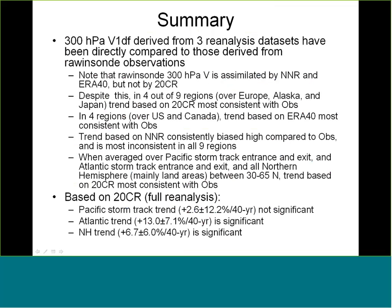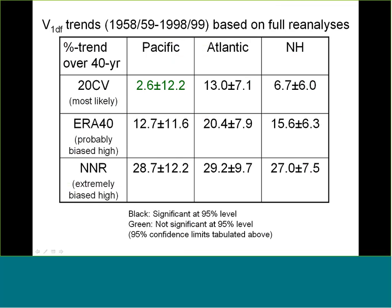The summary of this comparison is that even though radiosonde observations are assimilated by NCEP-NCAR reanalysis and ERA-40, but not by the 20th century reanalysis, in four out of the nine regions the trend based on the 20th century reanalysis is actually most consistent with the radiosonde observations. In four regions, the trend based on ERA-40 is most consistent, but the trend based on NCEP-NCAR reanalysis is consistently biased high. When averaged over the Pacific storm track entrance and exit, Atlantic storm track entrance and exit, and all northern hemisphere land areas, the trend based on the 20th century reanalysis is most consistent.